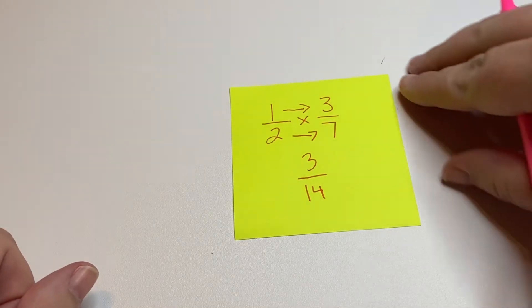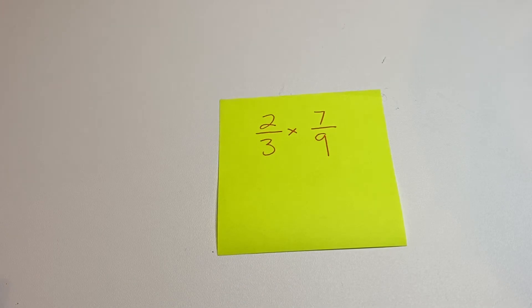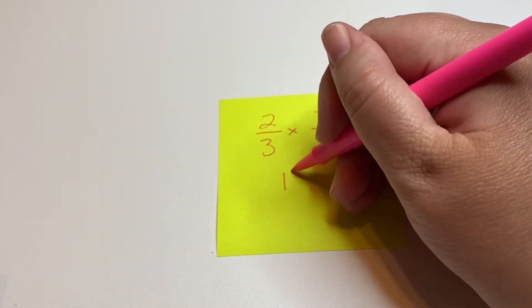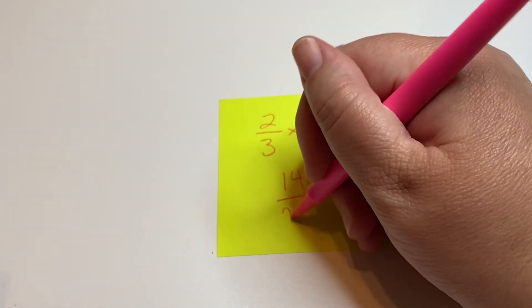Okay, let's look at another example. So we have two-thirds times seven-ninths. It's just going to be 2 times 7, which is 14. And 3 times 9, which is 27.